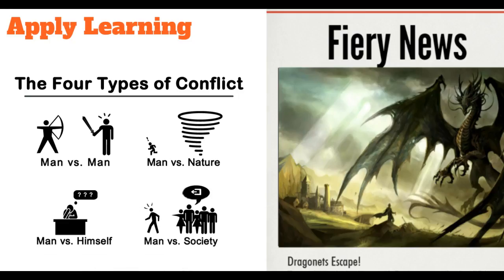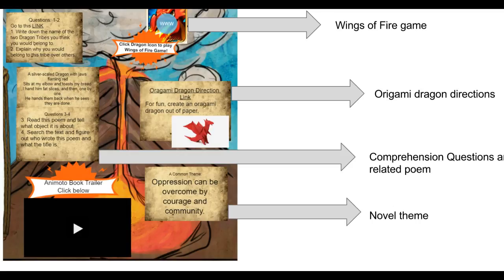Next, students applied their understanding of the four types of conflict with a newspaper article and a visual using Pictochart. Then, students found two resources such as an article, poem, picture, video clip, art, or a game that related to a significant topic in their novel.